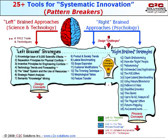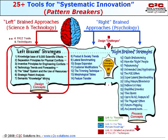In our research over the past 15 years, we've compiled dozens of systematic innovation tools. We loosely categorize these into right and left brain approaches. Left brain tools are more science and technology based, while right brain tools are more psychological based.